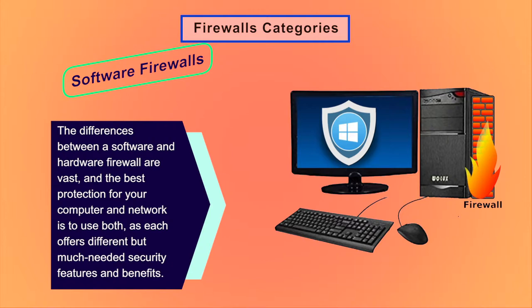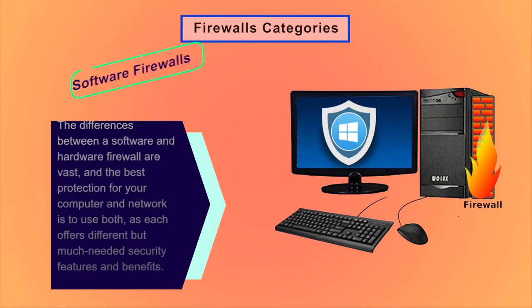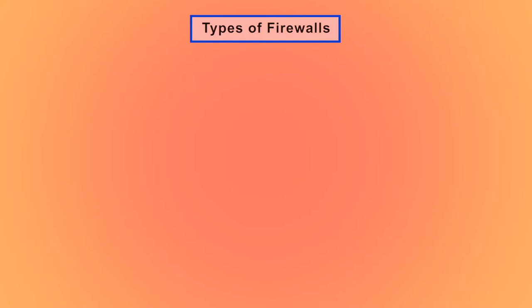Firewalls also vary in type depending on where communication originates, where it is intercepted, and the state of communication being traced. The basic types of firewalls are: packet filtering firewalls, circuit-level gateways, stateful inspection firewalls, application-level gateways, and next-generation firewalls.